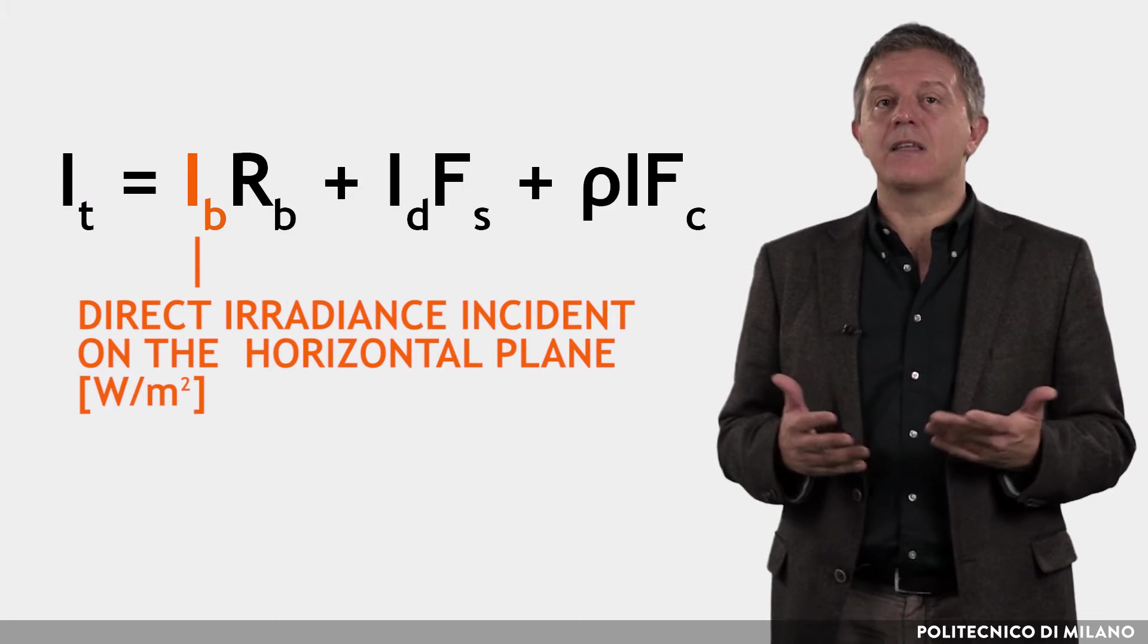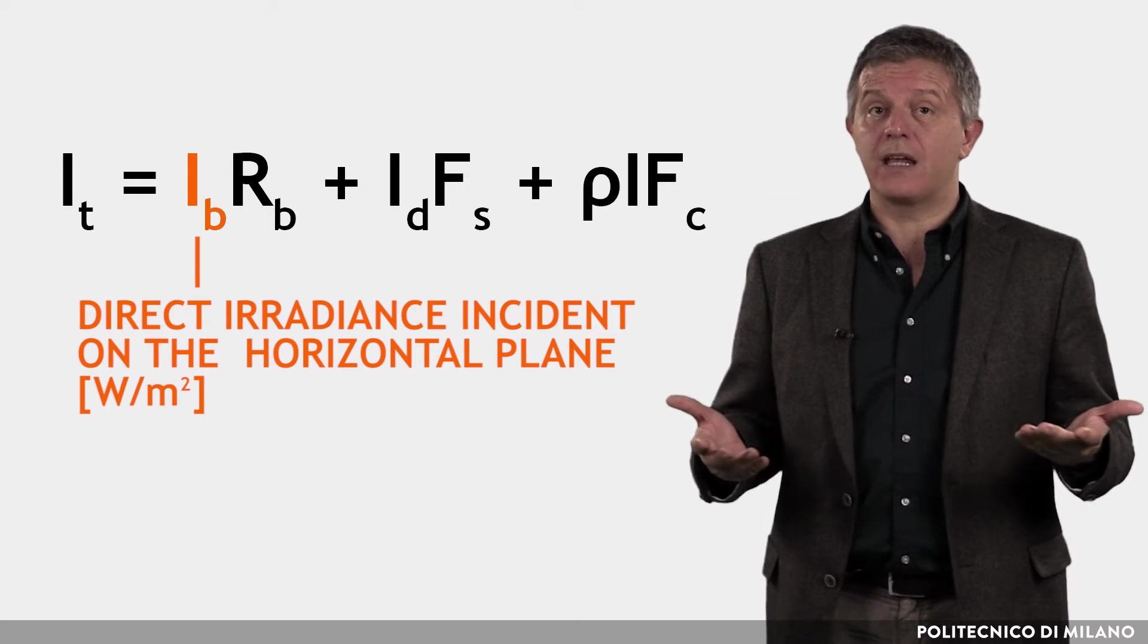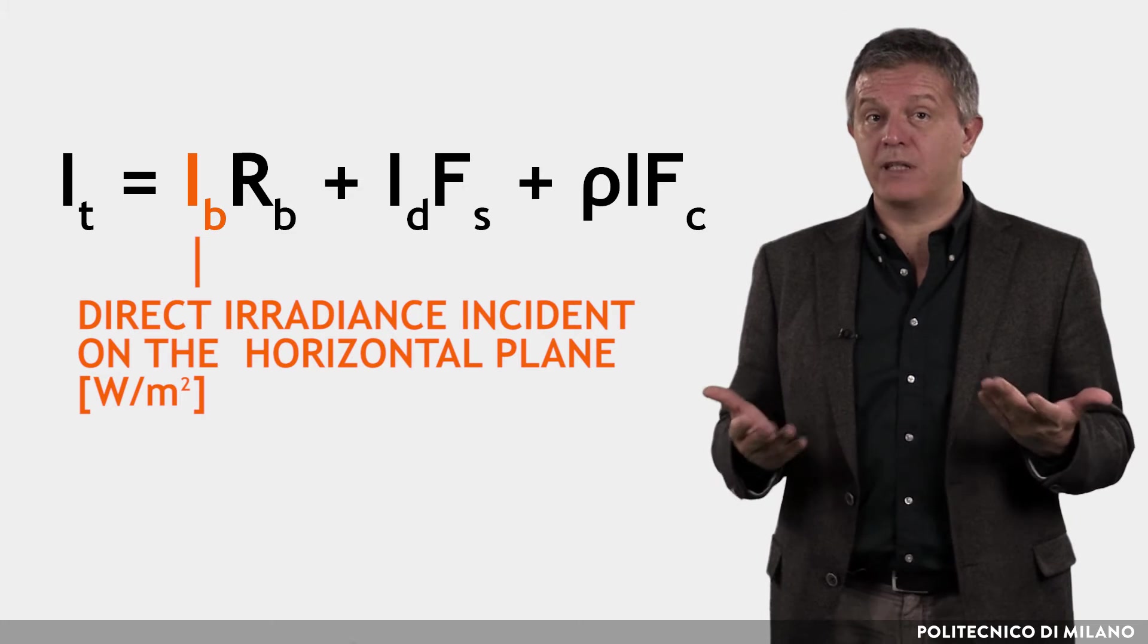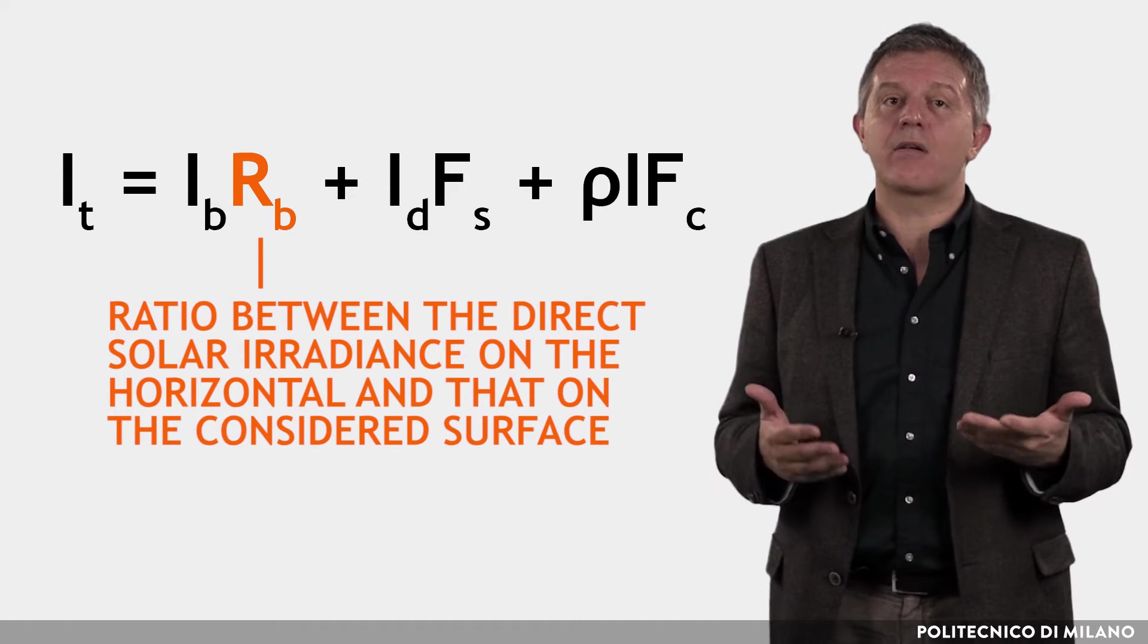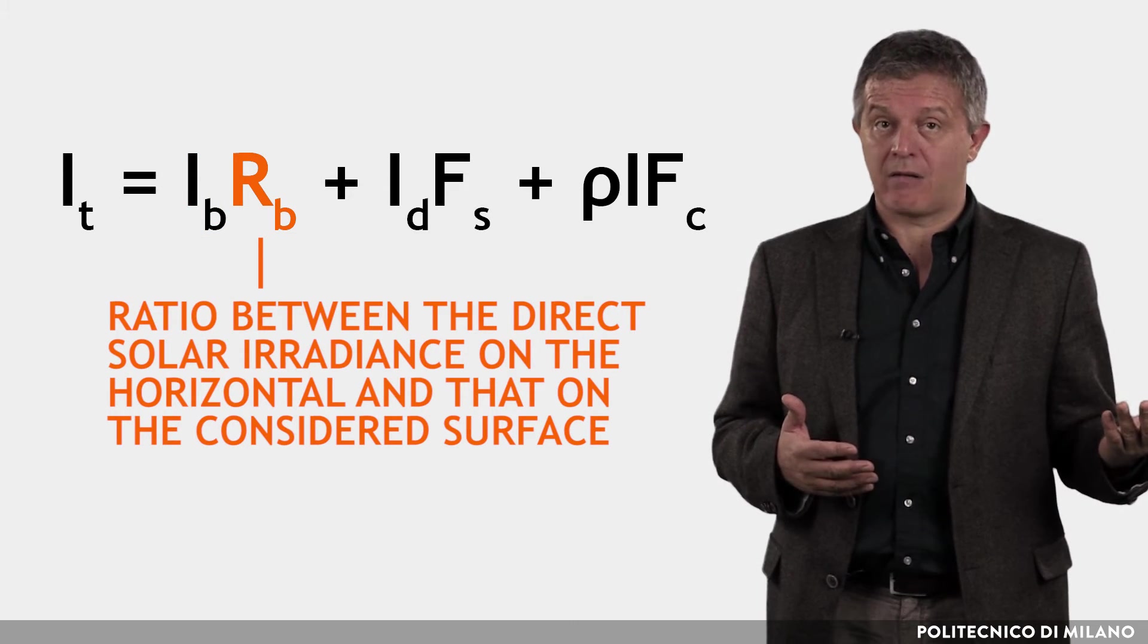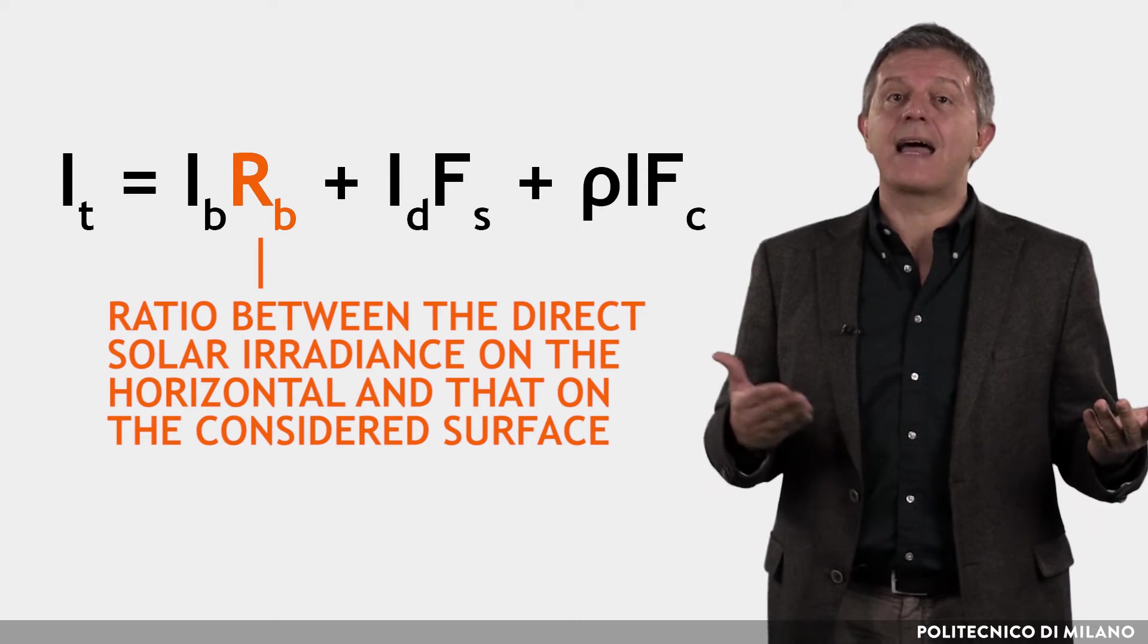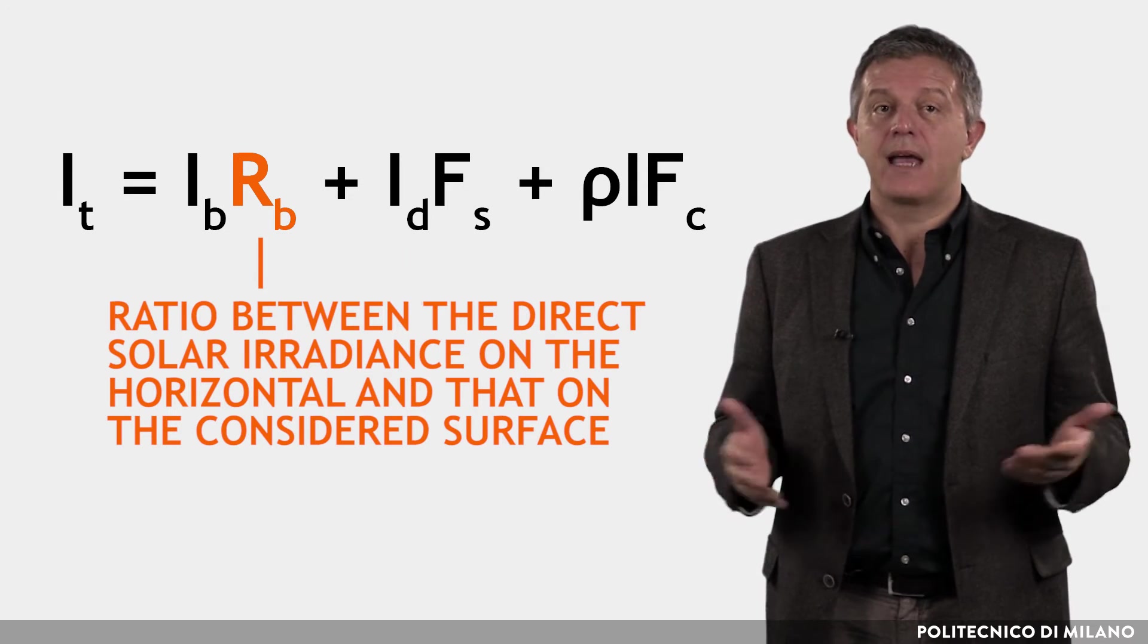IB is the direct irradiance incident on the horizontal plane expressed in watts per square meter. RB represents the ratio between the direct solar irradiance on the horizontal and that on the considered surface.